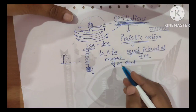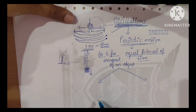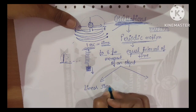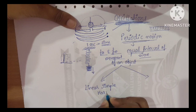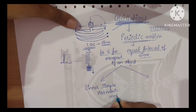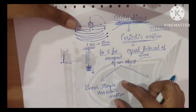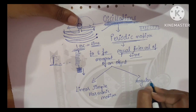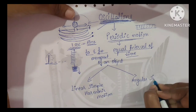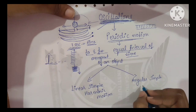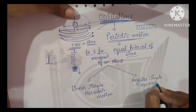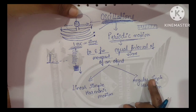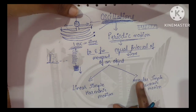In oscillations, there are two types. One is linear simple harmonic motion. In the first part we will study this. The second is angular simple harmonic motion.